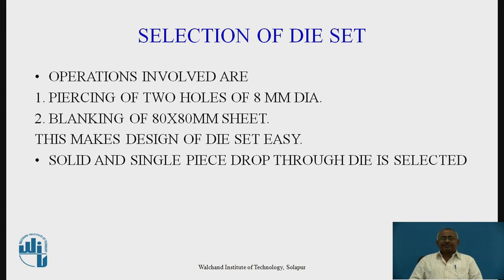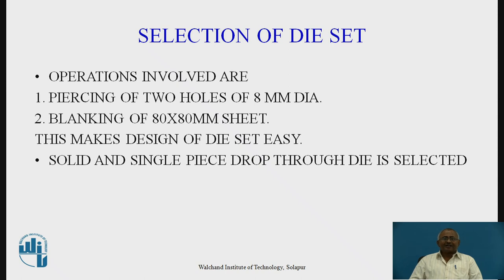Next is design selection of the die set. For selection of the die set, we have to consider the operations involved. Looking at the component geometry, there are two holes of 8 mm diameter which are to be pierced, and then we carry out blanking of the 80 by 80 mm sheet. Both operations are cutting operations, which makes design of the die set easy, so we can go with a solid single-piece drop-through die set.